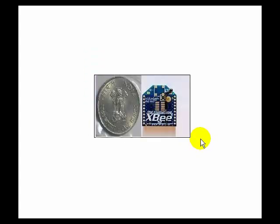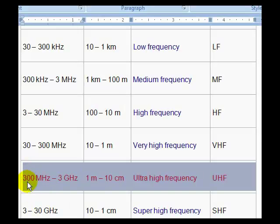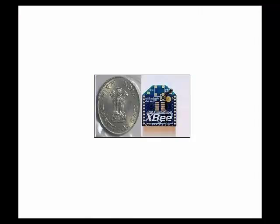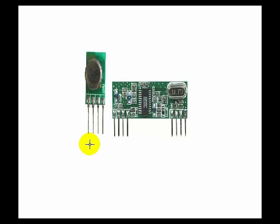The other RF module in the range of 2.4 GHz is the ZigBee module. This is also in the RF category as we discussed — the frequency range between 300 MHz to 3 GHz — and ZigBee operates at 2.4 GHz. In this transmitting unit we have 4 pins: positive, negative, data in, and antenna. It takes only serial data and is normally interfaced from a microcontroller through a serial level shifter IC, and that is how the serial data reaches the module.